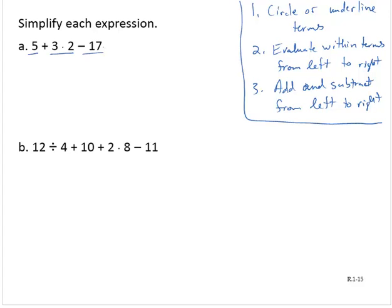So now, evaluate within terms. Here's where we take care of multiplications and divisions, and we always go from left to right. 5 is by itself. We can't do anything to it, so let's just bring it down. 3 times 2, I'm going to evaluate that. 3 times 2 is 6. And minus 17, I can't do anything there, so I just bring it down.